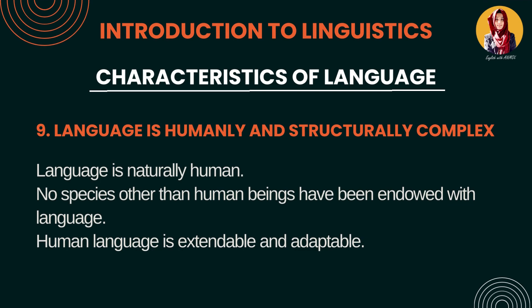Number 9: Language is humanly and structurally complex. Language naturally humans ke saath associated hai — humans ke paas hi ability hai ki woh language ko acquire aur learn kar sakein. Jaisi animals hain, woh humare jaisi language nahi bol sakte because they don't have that ability. And human language is extendable and adoptable — yeh structurally complex hai.